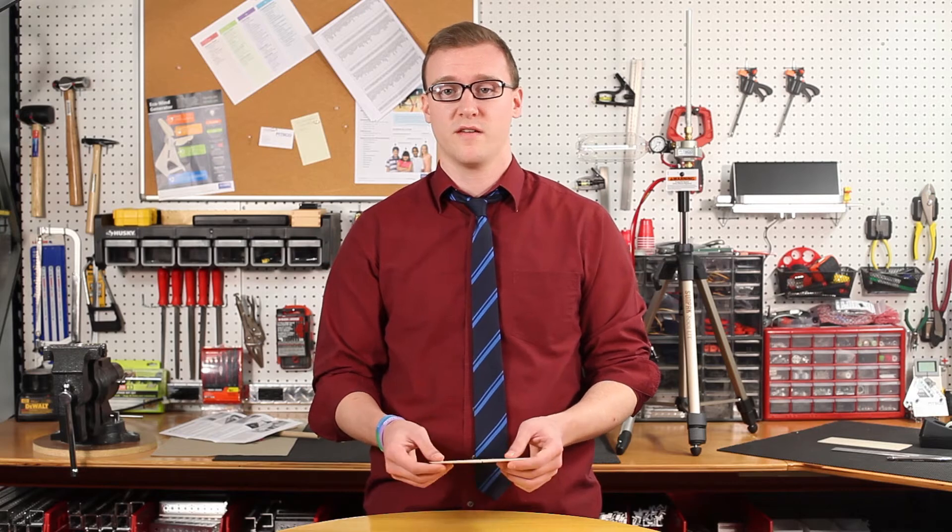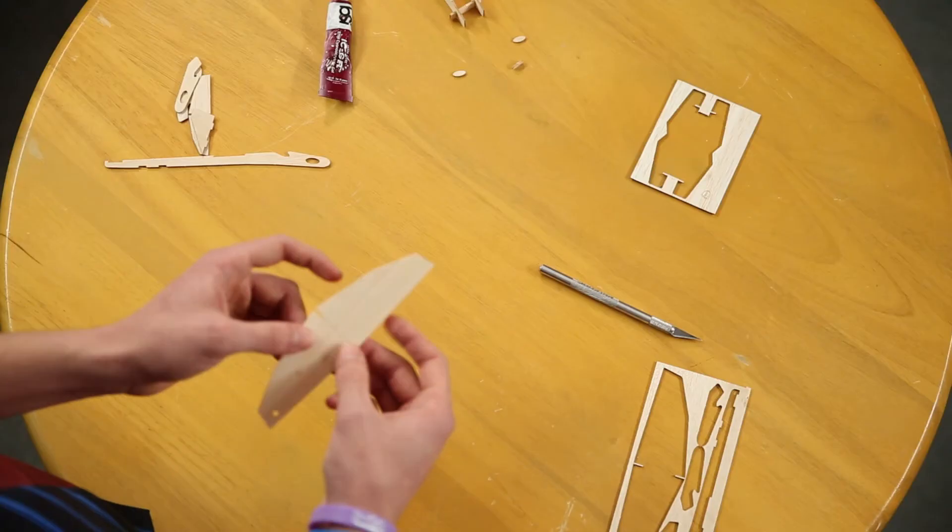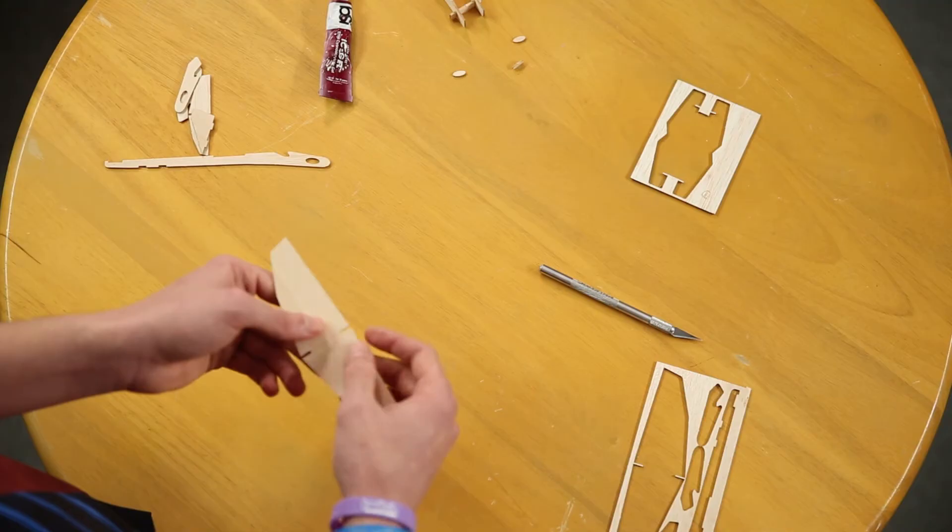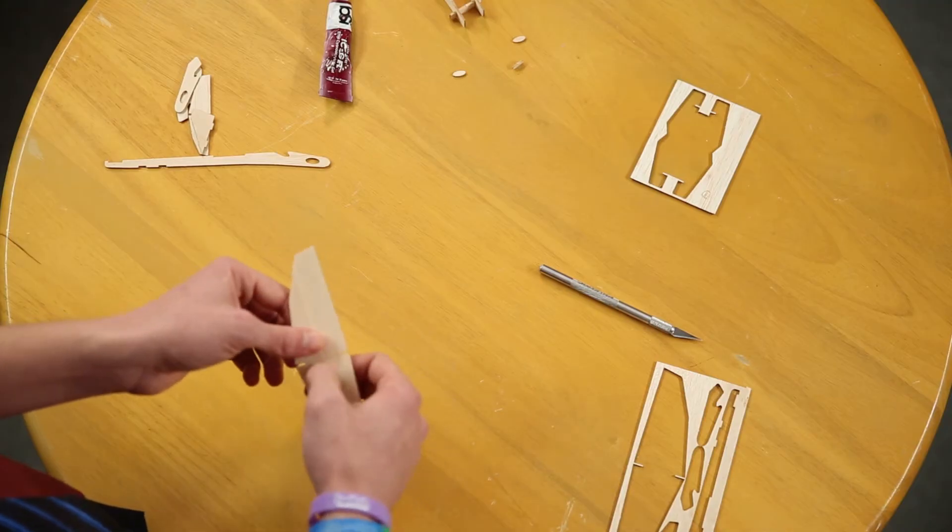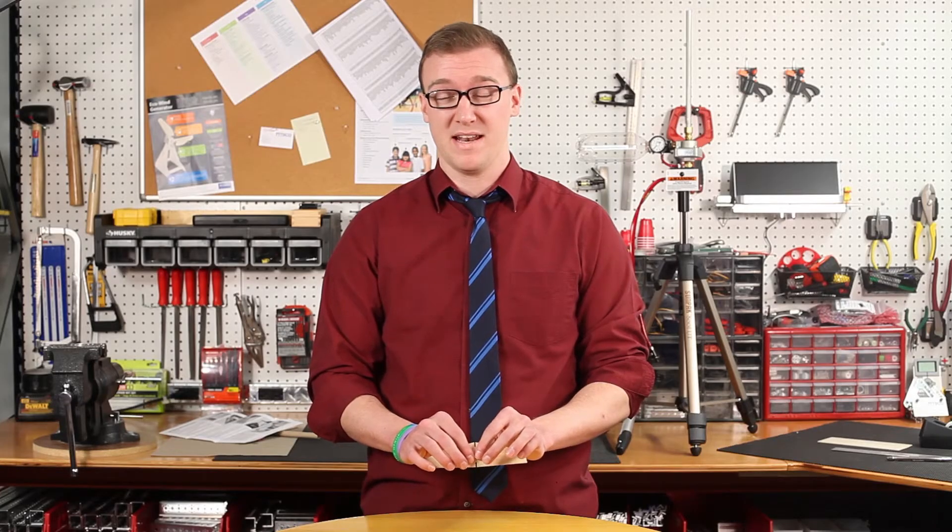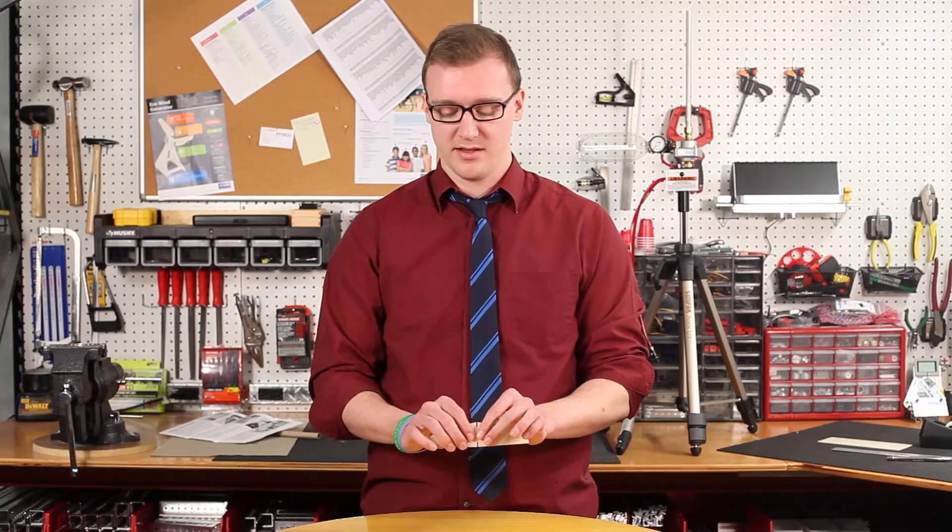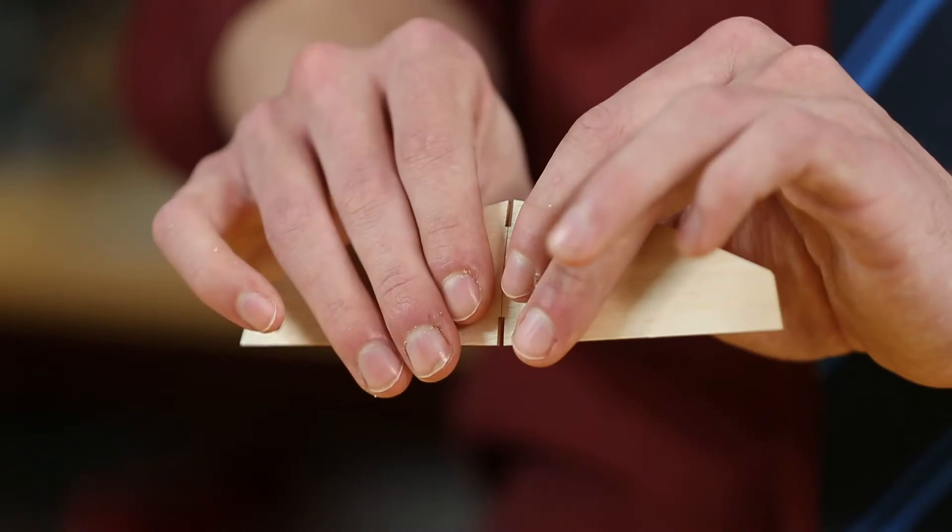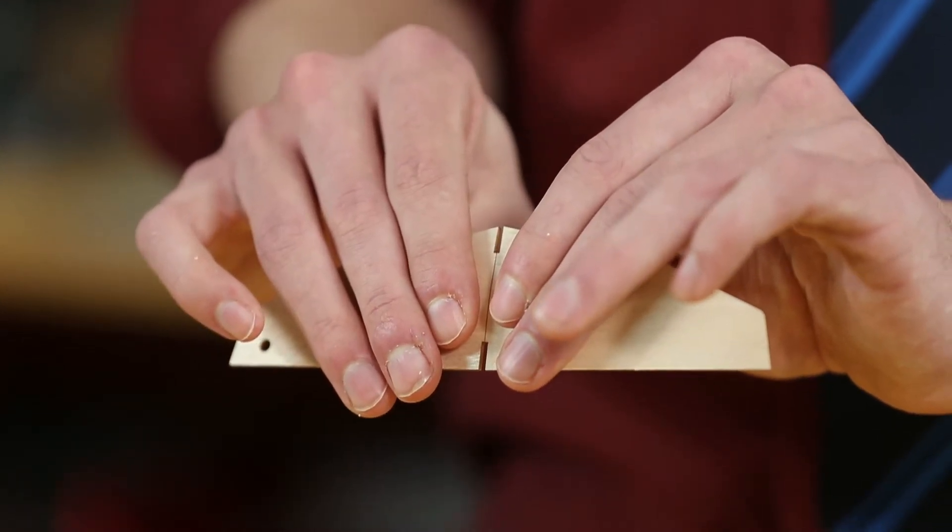Next, we're going to take the wing of the balsa wood and on one side of it, there's going to be a line that you can see that's cut about halfway through the wood. You're going to want to bend it ever so slightly. You don't want to break it all the way through, but you do want to bend it and you will hear a cracking noise.